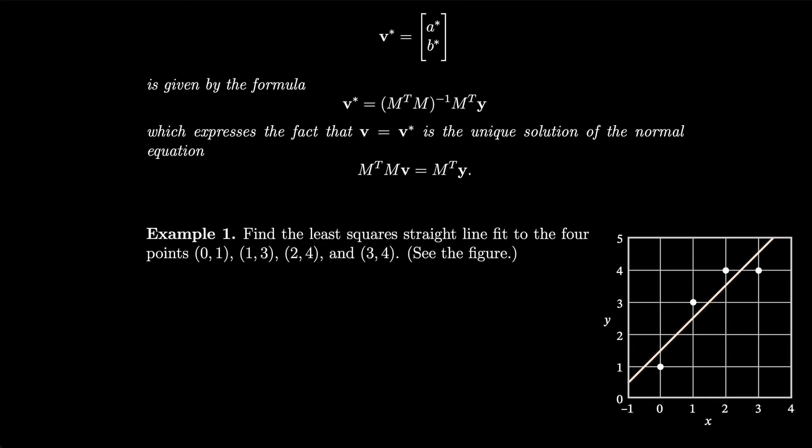So let's do it. Let's find the least squares straight line fit to the four points given in example one. You can see them plotted in the figure, and there is a line drawn. Let's see if we can get the equation of that line. So first, we'll write out our matrix M. That's equal to ones in all the first column, four points, so four ones. And then the x values: 0, 1, 2, 3.